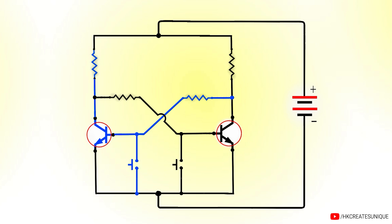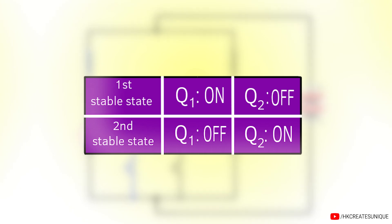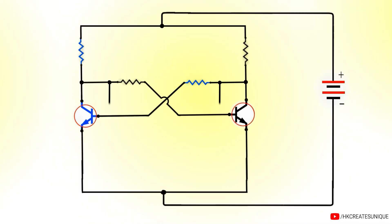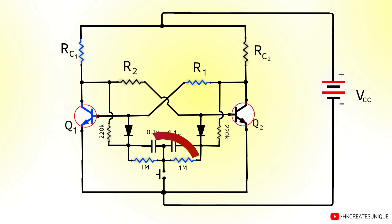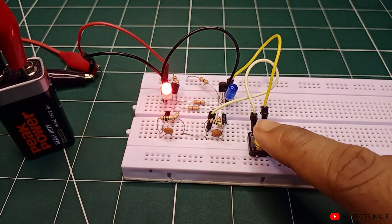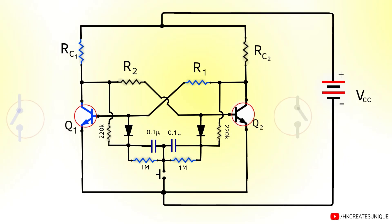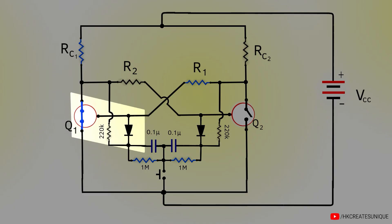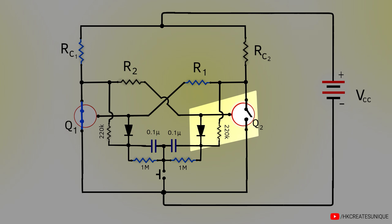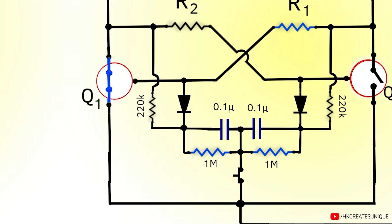In the standard multivibrator circuit, two separate triggering inputs are needed to change between two stable states. By connecting additional components — specifically diodes — a single triggering input can change between two stable states. The diode adjacent to the on transistor gets forward biased, while the diode adjacent to the off transistor gets reverse biased. When the button is pressed, the forward biased diode pulls the voltage down at the base and turns off the transistor, changing the state.